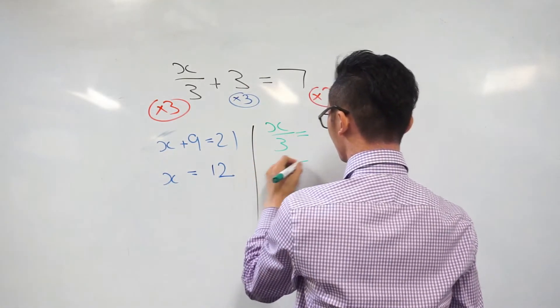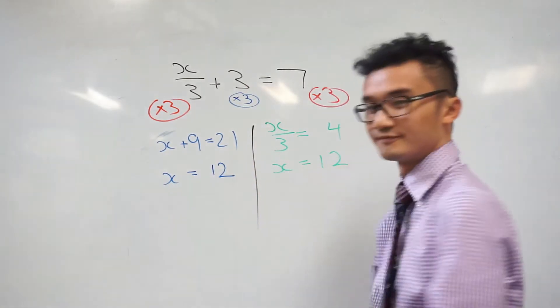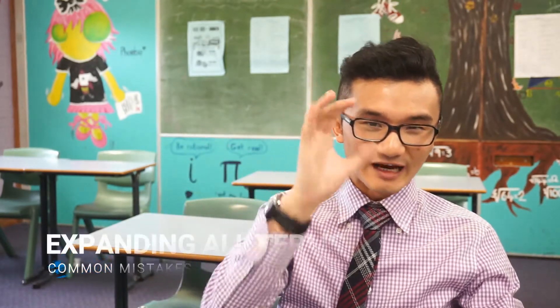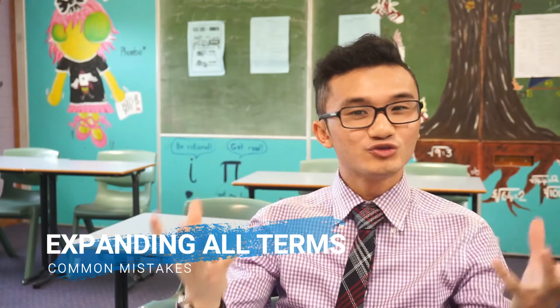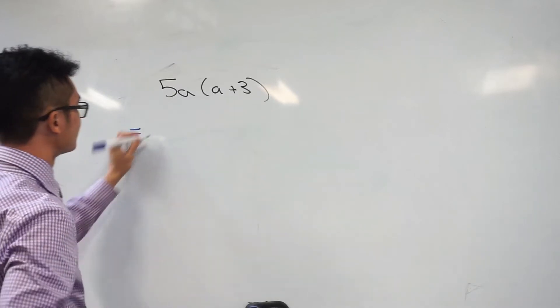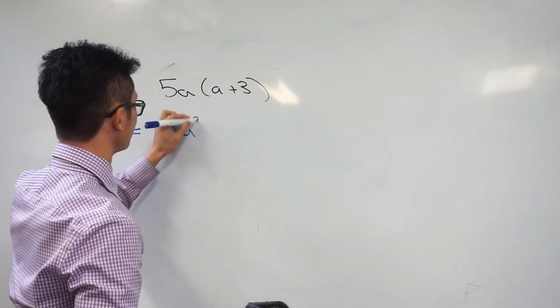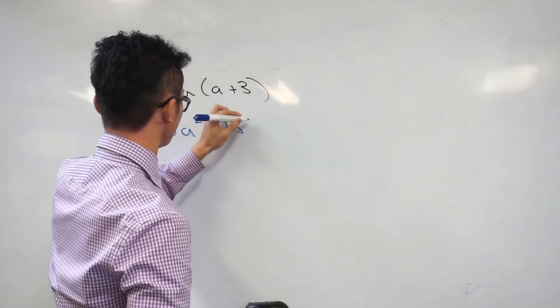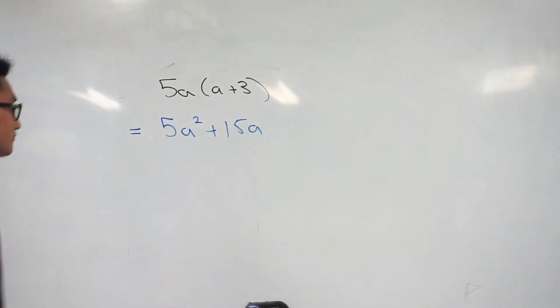Speaking of expanding — when we're looking at expanding, we know that means multiplication. But students again forget to multiply everything on the inside by the outside, and that includes when we're looking at variables. For example, with 5a multiplied by (a plus 3): 5a times a is actually 5a squared, and 5a times 3 is 15a. Being careful of any signs there could also affect the final expression you're going to get.